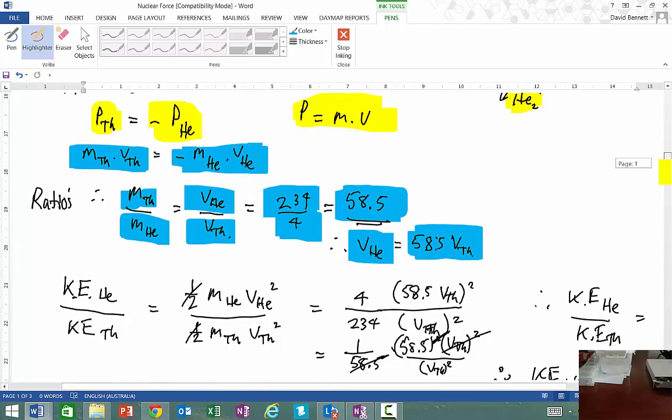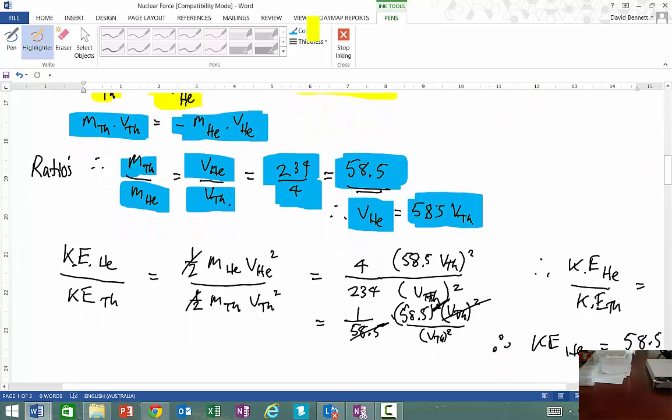Now when we start looking at the kinetic energy, the ratio of the kinetic energies, we know that kinetic energy of the helium to kinetic energy of the thorium, we're doing half mv squared. Over here, we're doing our half mv squared. So in other words, when we put our values in there, the halves are both the same, so we can cancel that out, 4 to 234.